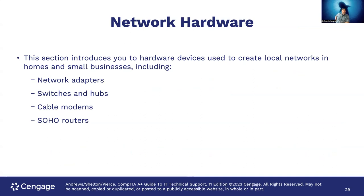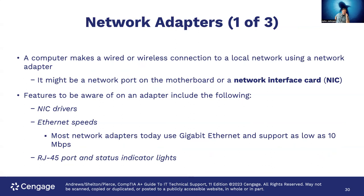Network hardware: this section introduces hardware devices used to create local networks in home and small businesses, including network adapters, switches and hubs, cable modems, and SOHO routers. A computer makes a wired or wireless connection to a local network using a network adapter — either a network port on the motherboard or a network interface card (NIC). Features to be aware of include NIC drivers, Ethernet speeds (most adapters today use Gigabit Ethernet, supporting down to 10 Mbps), and the RJ45 port. RJ45 is the connector on the end of Cat5 or Cat6/7 cabling. RJ11 is used for telephones.